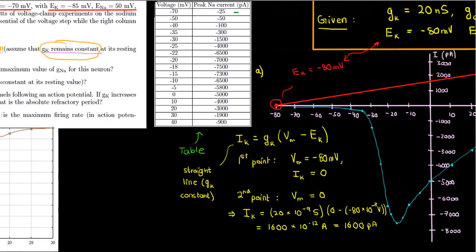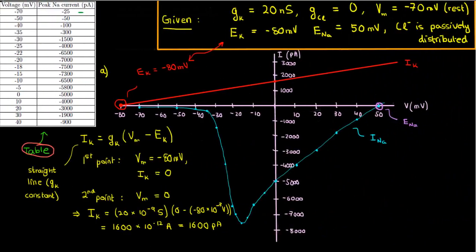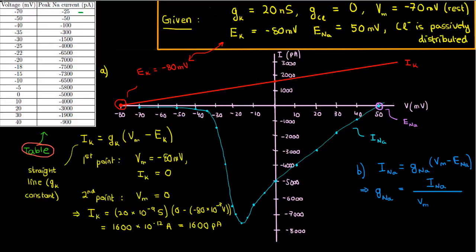That does it for Part A. In Part B, we have to find the maximum value for the sodium conductance of the neuron using the data from the voltage clamp experiment. This part is tricky — people often assume the maximum conductance occurs at the same point as the maximum current, but that isn't necessarily true. The conductance at a particular voltage is found by rearranging the current formula: G_Na equals I_Na divided by (Vm minus E_Na). You'll find the maximum conductance occurs at or after the maximum current, because we need a large current but also a small driving force in the denominator.